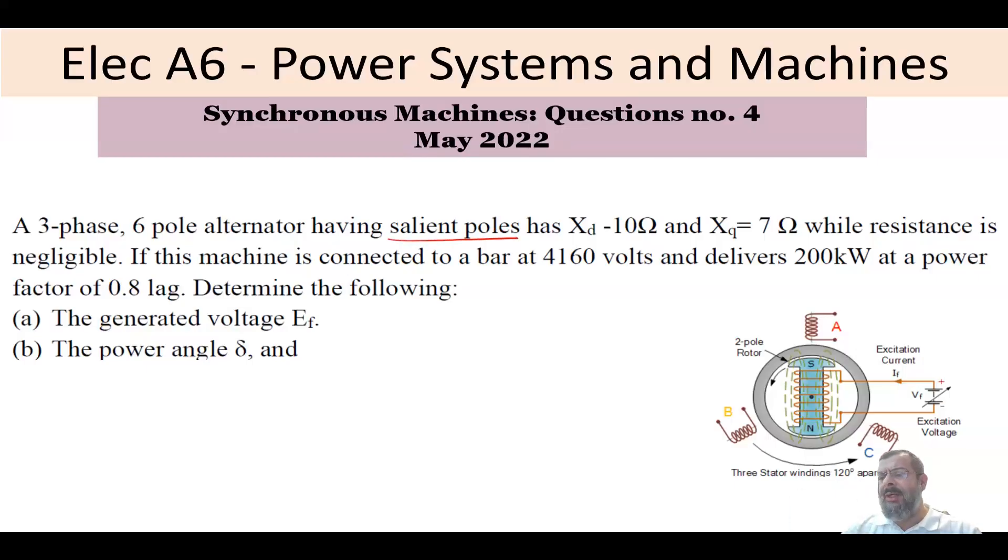All the questions I have done so far are about round rotor and there the model will look like this. This is the internal generated voltage. We have XS. Sometimes we may not consider RA. Most of the time we don't consider RA. And this is your VT. This is your IA. Apply KVL. Very straightforward.